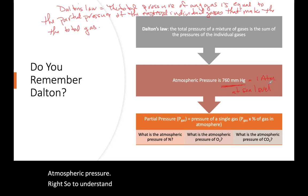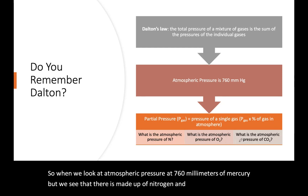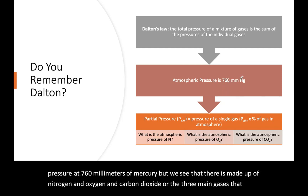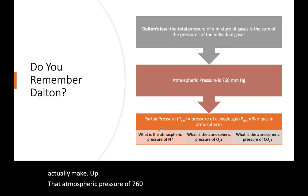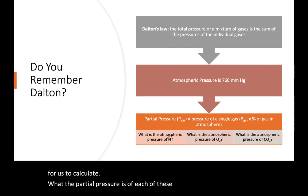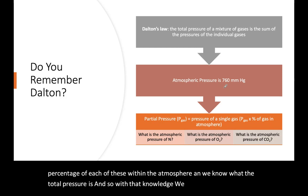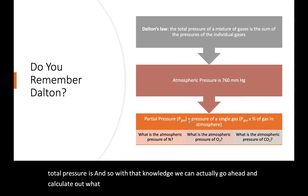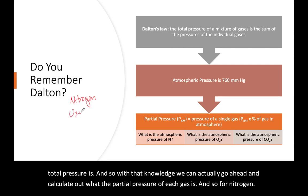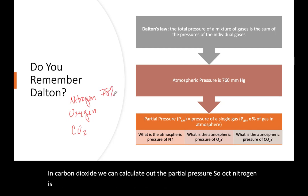To understand this we have to know what gases make up the total atmospheric gas. The top three common gases in the atmosphere are nitrogen, oxygen, and carbon dioxide — the three main gases that make up that 760 millimeters of mercury. Nitrogen is actually 78 percent of the atmosphere. One of the reasons it's important to keep the air external to the body is that you don't want 78 percent nitrogen floating around in your blood.